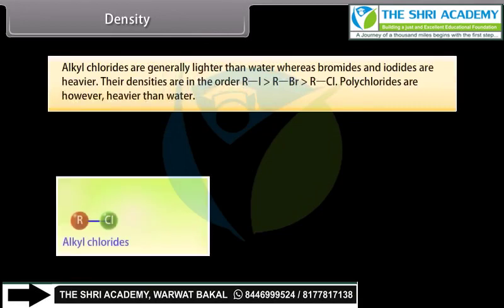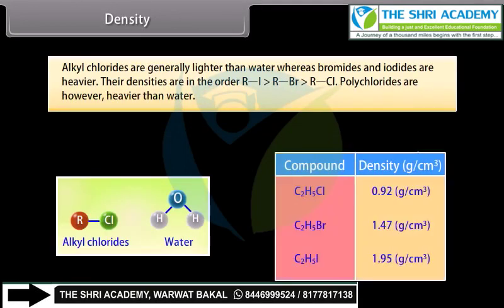Alkyl chlorides are generally lighter than water, whereas bromides and iodides are heavier. The densities are in the order R-I > R-Br > R-Cl. Polychlorides, however, are heavier than water.